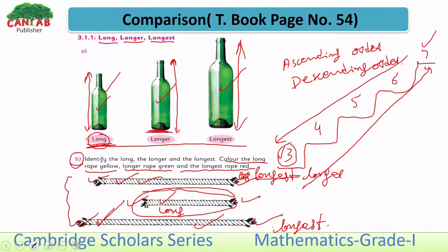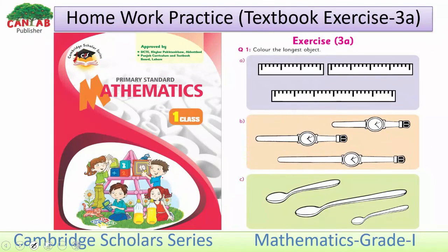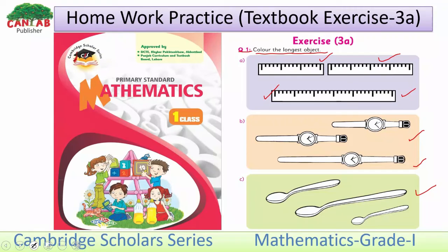Students, now come to Exercise 3A. Always read the statement carefully. Question 1: Color the longest object. Observe the given objects in each part and color the longest one — you can choose red, blue, or any color. This one is the longest scale, this one is the longest watch, and this one is the longest spoon. You should color these objects.